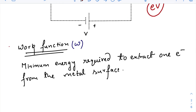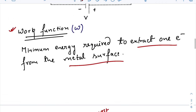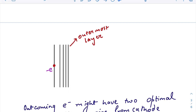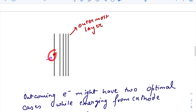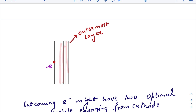The work function is the minimum energy required to extract one electron from the metal surface. The surface may consist of 20 to 30 molecular layers. A photon might excite an electron lying a few layers behind the topmost layer, and while coming out it might collide with many other electrons in adjacent layers, losing some of its energy.